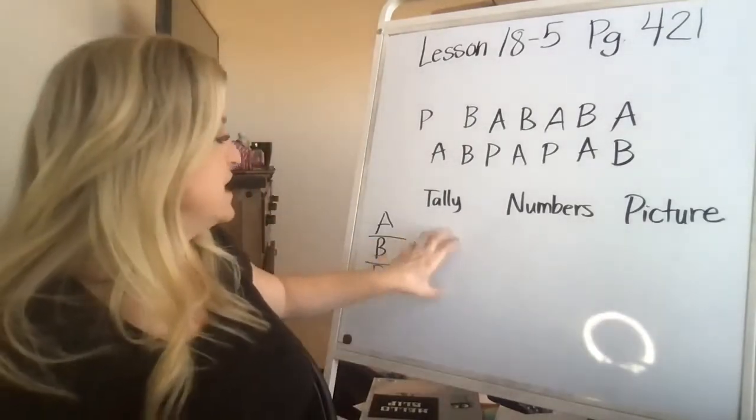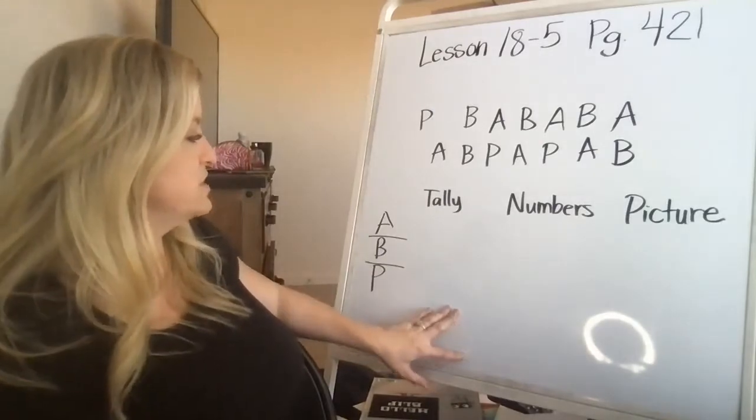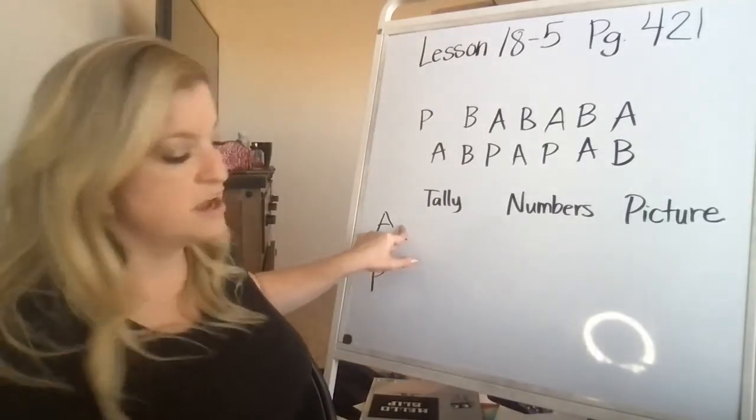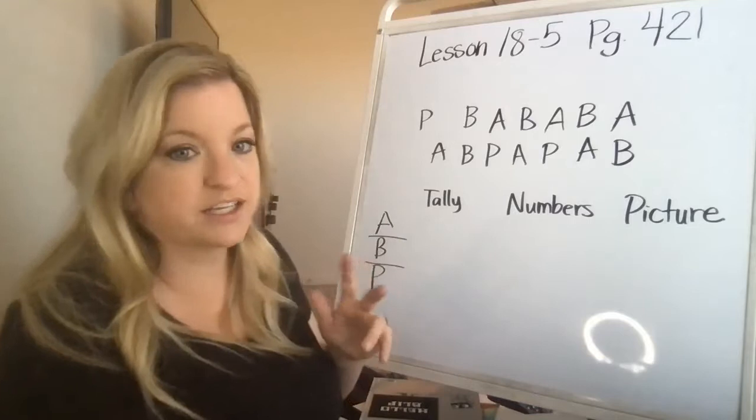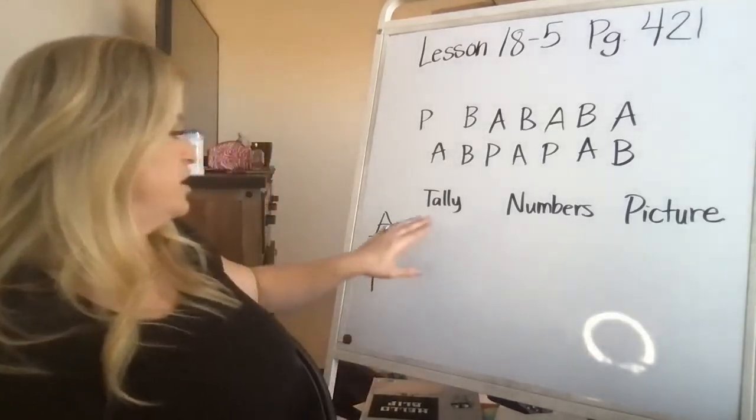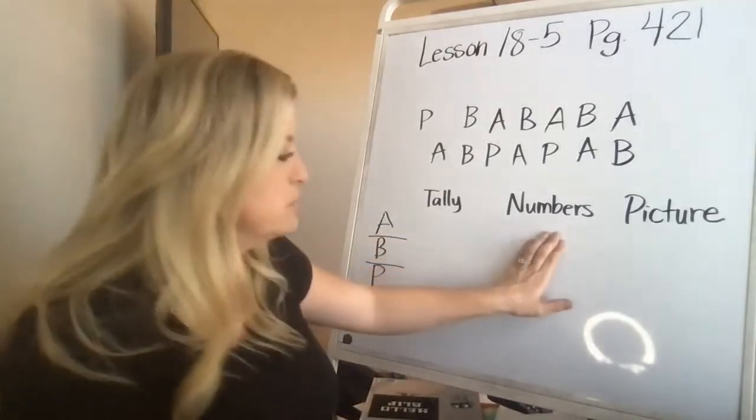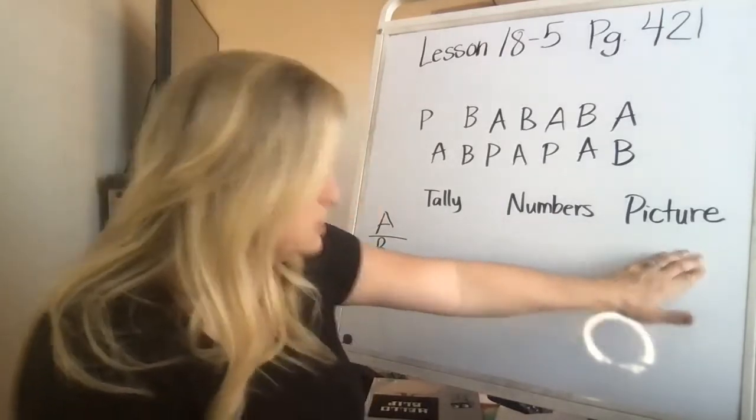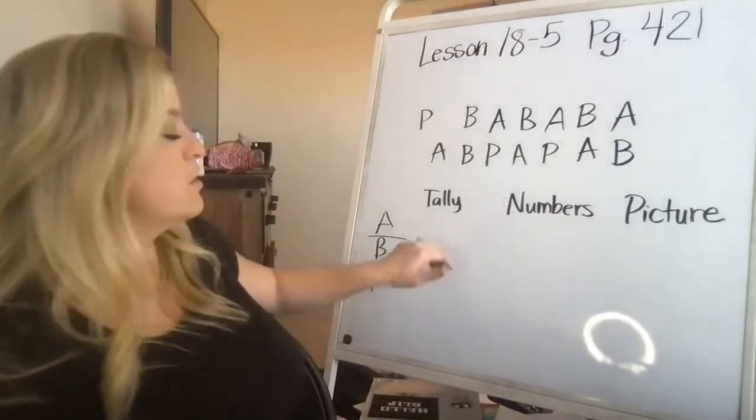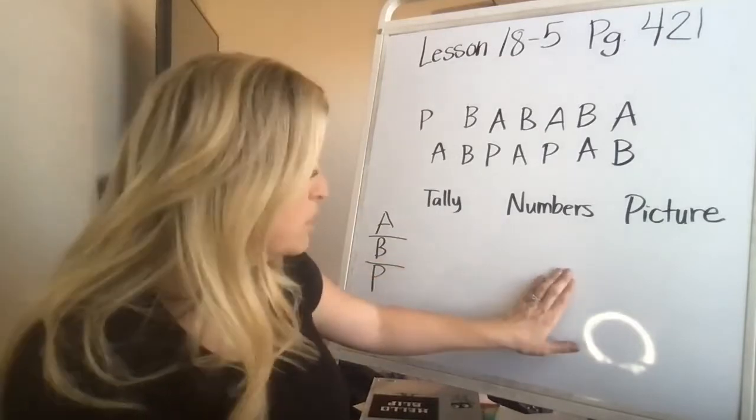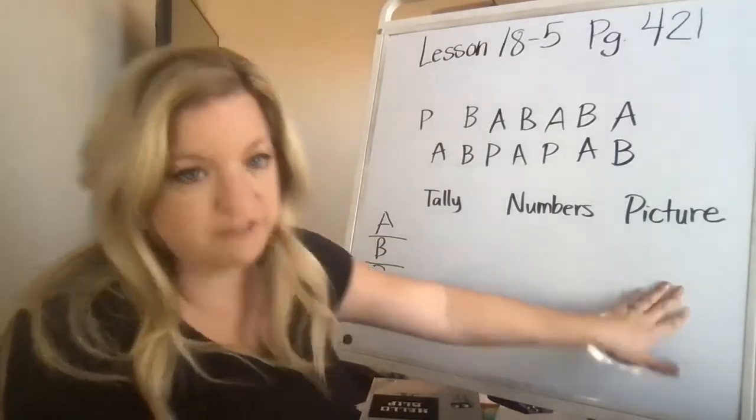So for a tally chart, we're going to go through and we're going to count how many apples there are. And then what I like to do is I like to do them all at the same time. So if I know I have three tally marks, I can put three numbers, I can draw three pictures. If I have four, same thing: four tally marks, four in the number, four little smiley faces.